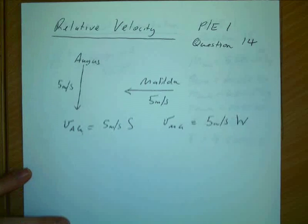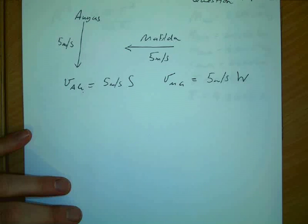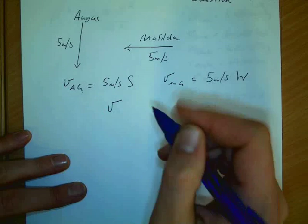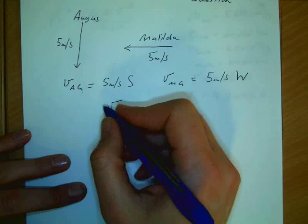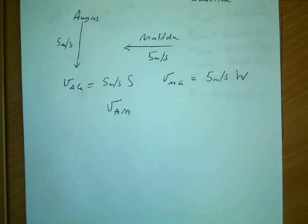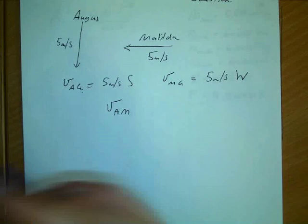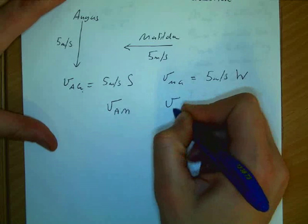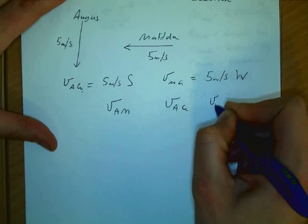So we're going to need to draw a little diagram here because we want to find out the velocity of who with respect to who. So we use a notation VAM. We know that it's related to VAG and VMG.